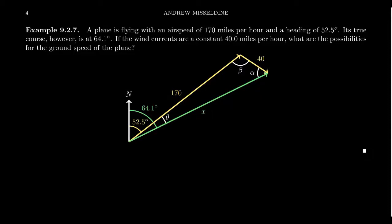In this video, we're going to solve a problem where a plane is flying with an airspeed of 170 miles per hour with a heading of 52.5 degrees. Its true course, on the other hand, will have a heading of 64.1 degrees. If the wind currents are a constant 40 miles per hour, what are the possibilities for the ground speed of the plane?